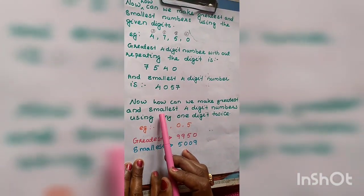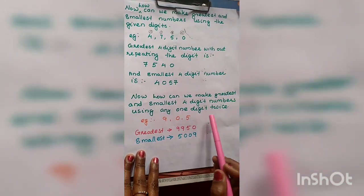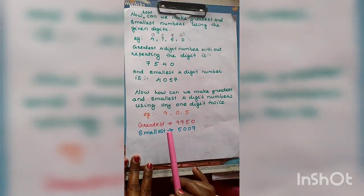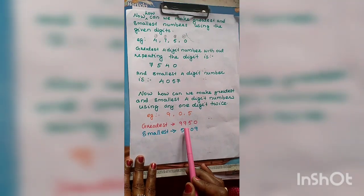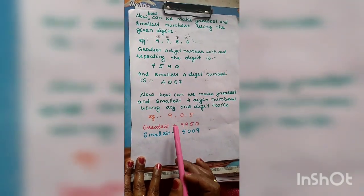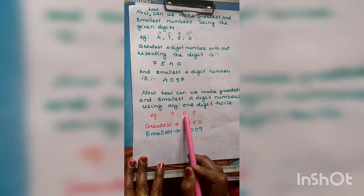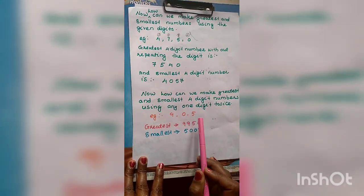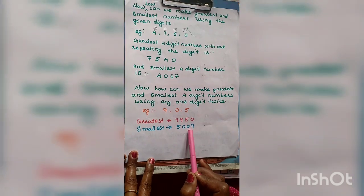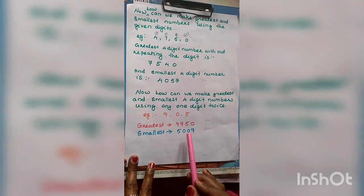Now we will study how to make the greatest and smallest 4-digit numbers using 3 given digits with 1 digit used twice. For the greatest number, use the greatest digit twice: 9, 9, then 5, then 0. For the smallest number, start with 5 (since numbers cannot start with 0), then 0 twice, then 9 — giving you the smallest 4-digit number using one digit twice.